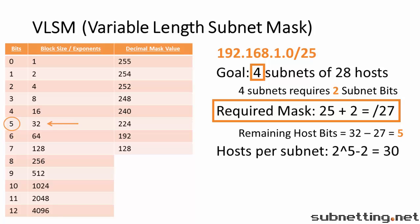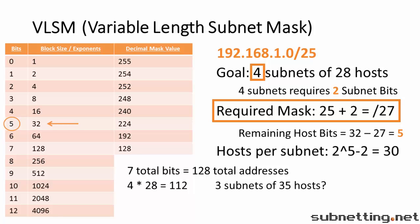With 2 subnet bits and 5 host bits, we have 7 total bits, which is 128 total available addresses to work with. Our goal of 4 subnets and 28 hosts per subnet means we need 4 times 28, or 112 total addresses. But now suppose our goal was 3 subnets of 35 hosts each. 3 times 35 equals 105, which is still less than 128, and also less than 112. So you would be tempted to guess that it would work. But it turns out it doesn't. That's because 3 subnets still requires us to use 2 bits for subnets, so we still only have 5 bits left for hosts, or 30 hosts per subnet. Therefore, 35 hosts won't work.